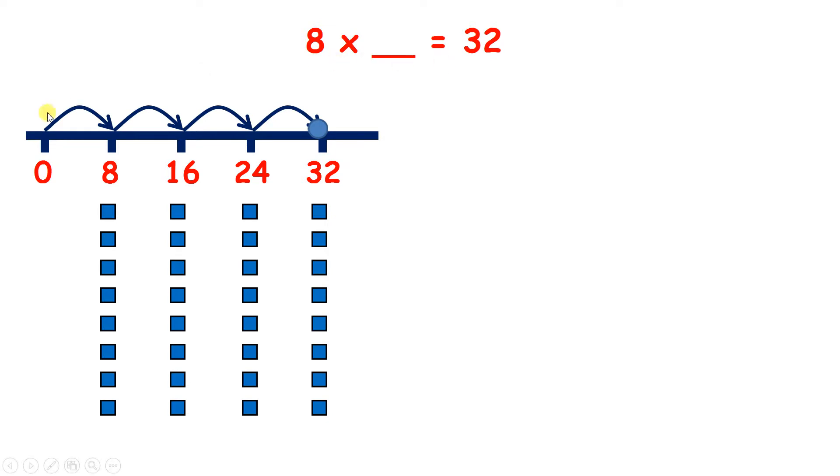And we needed 4 jumps, so 8 times 4 is 32. But what we've really done here is divide 32 by 8. And we made 4 groups, so our answer is 4. And if we know 32 divided by 8 is 4, we know that 8 times 4 is 32.